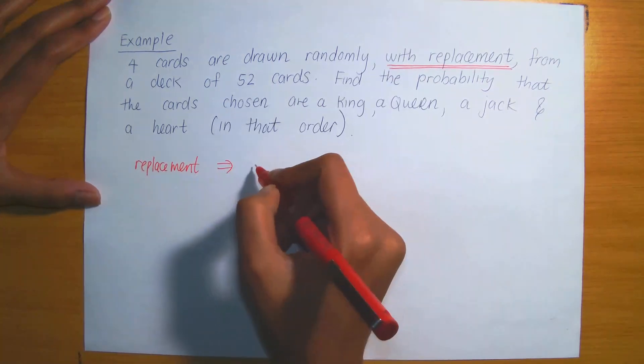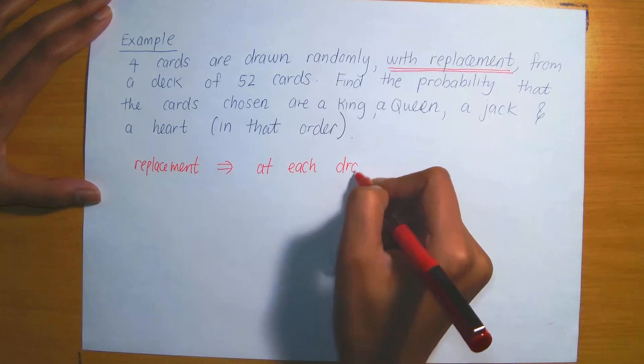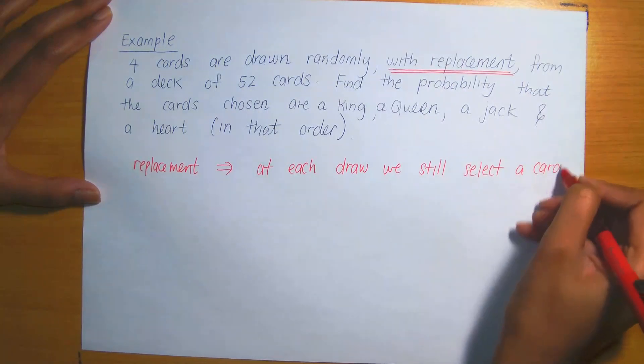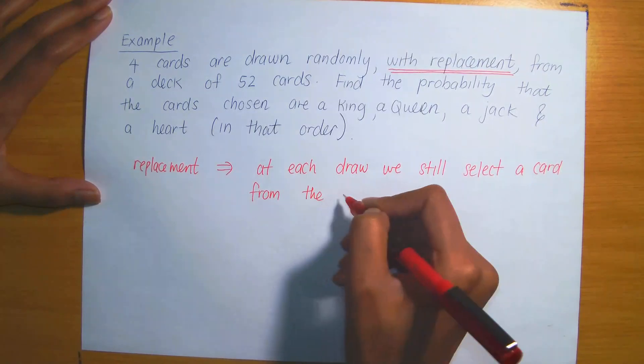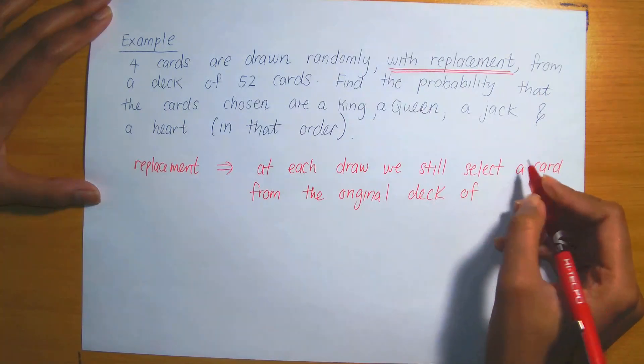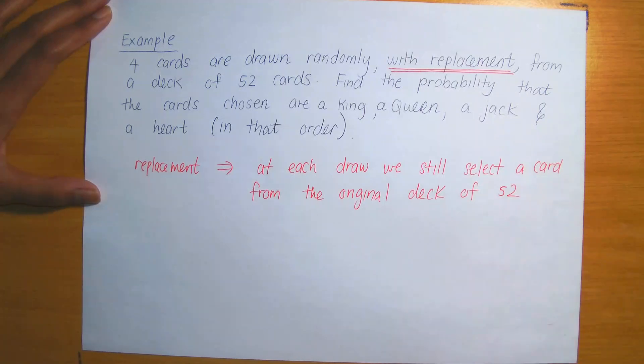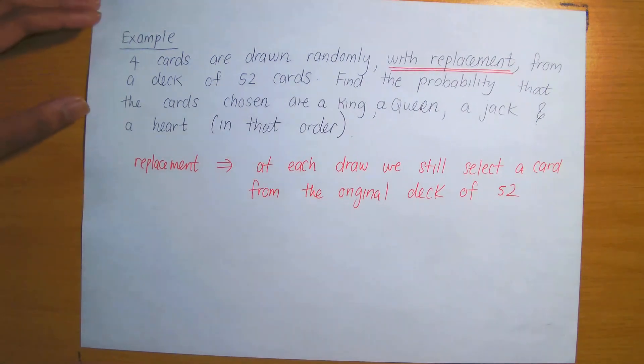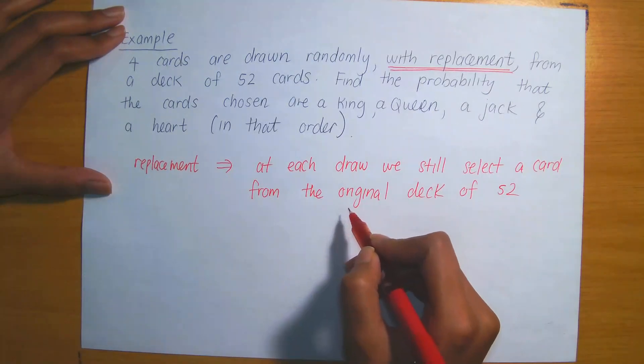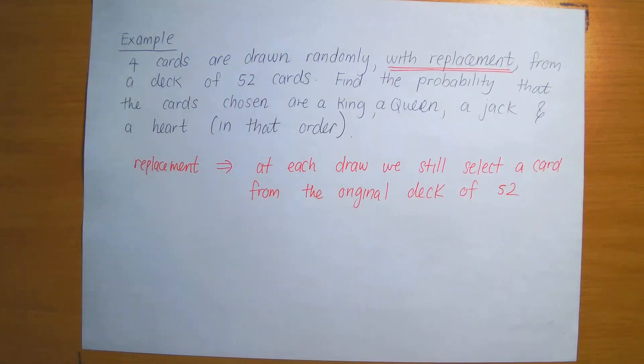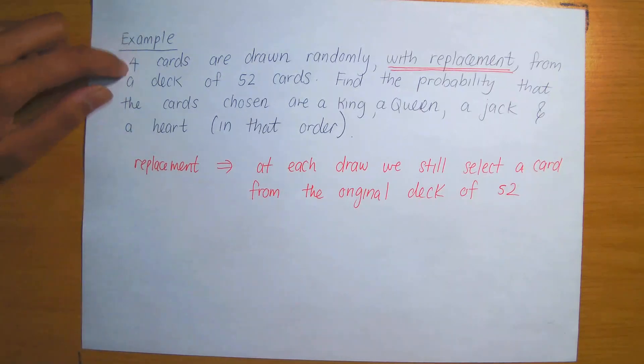Replacement implies that at each draw we still select a card from the original deck of 52, because if we were completing draw one, if I was selecting the first card, I would select it, record what it is, and then put it back into the deck, and then select the second, and repeat the procedure. So at each draw you are replacing the card, you're putting it back into the deck. That means that at each draw you are essentially working with the same deck of cards, and therefore this does not affect the outcome of any other draw. So picking a card in the first draw does not affect what's happening in the second draw, the third, or the fourth draw.